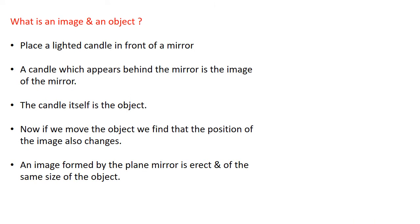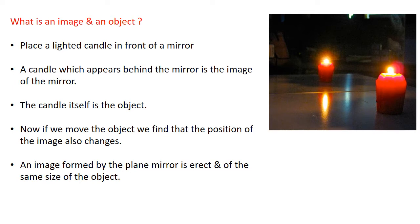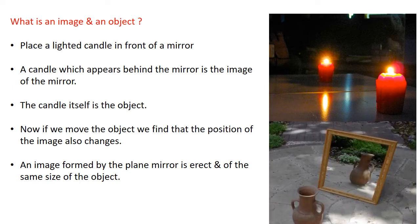Now, what is an image and an object? If you place a lighted candle in front of a mirror, the candle which appears behind the mirror is the image. You can see in the picture, a candle is placed in front of the mirror and a similar candle you can see in the mirror — this we call as the image, whereas the candle itself we call as the object. If we move the object, the position of the image also changes. An image formed by a plane mirror is erect and of the same size as the object — the size does not change.